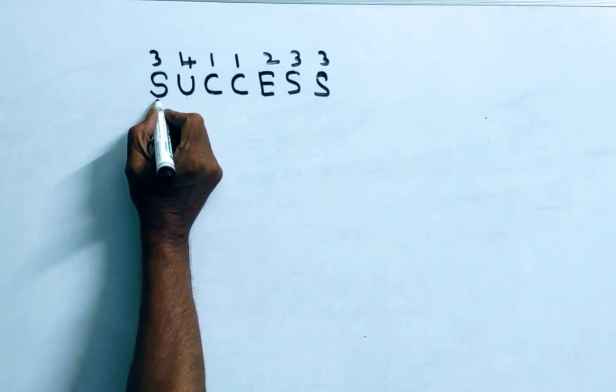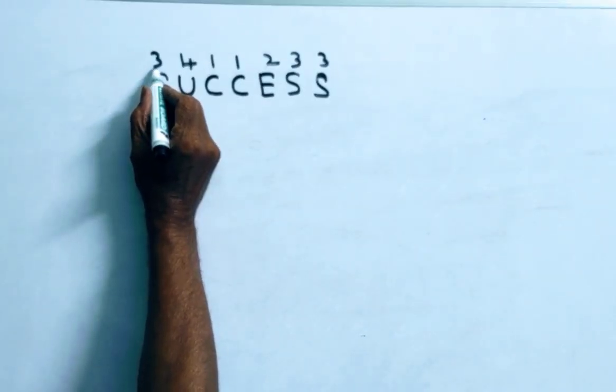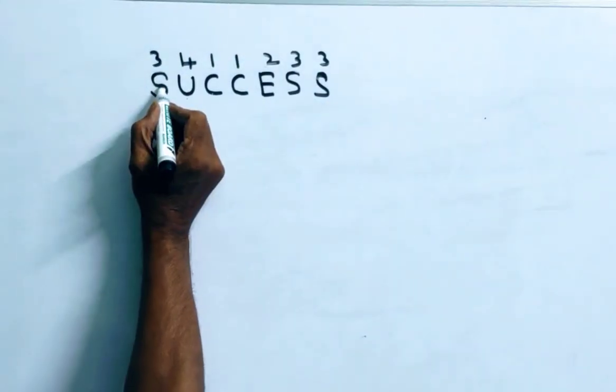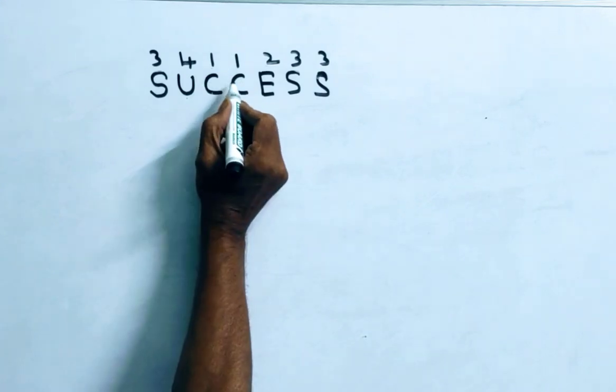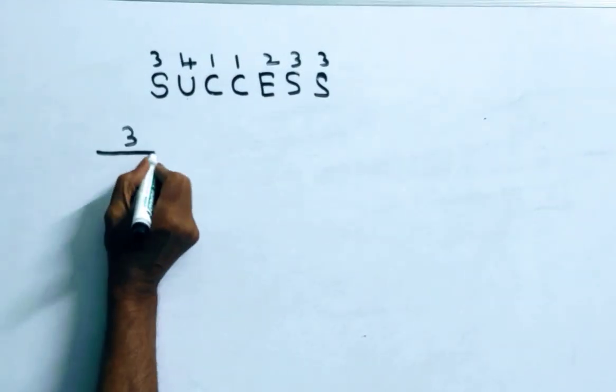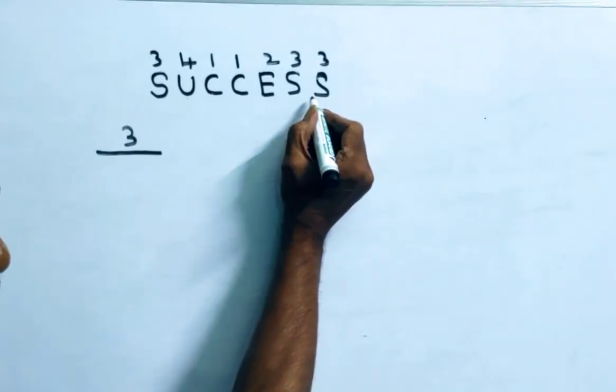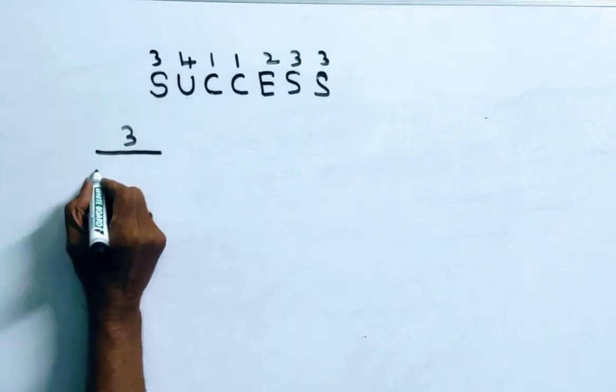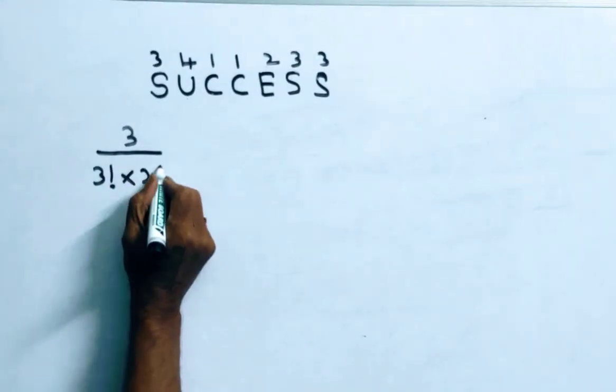See friends, let us come to S. How many letters are there to the right of this S whose rank is below 3? 1, 2, 3, so 3 over. Including S, how many letters are repeated? 3 S's are there and 2 C's are there, 2 factorial.